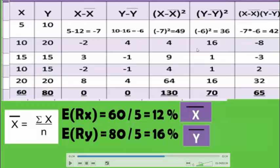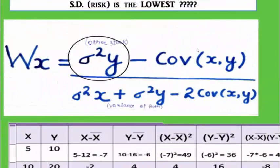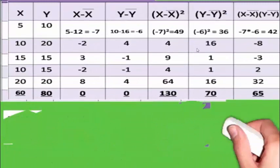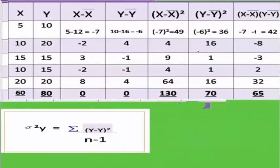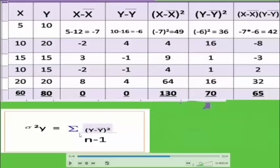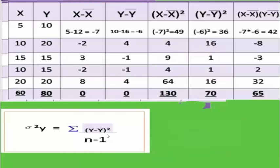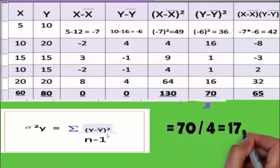Now we calculate the variance of stock Y using the formula: summation of (Y − Ȳ)² divided by N−1. We divide by N−1 because we are using a sample, not the entire population, to give an unbiased estimator. For stock Y, that is 70 divided by 4, which gives 17.5.